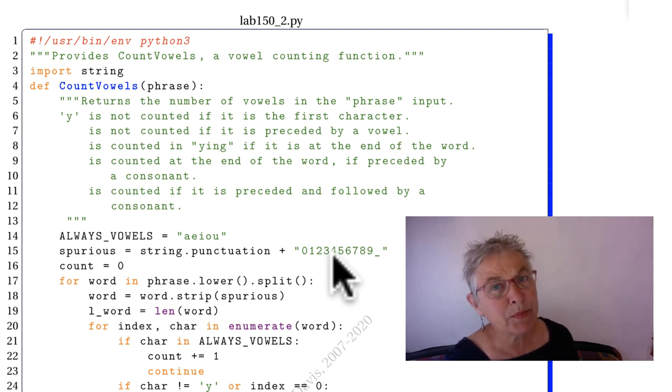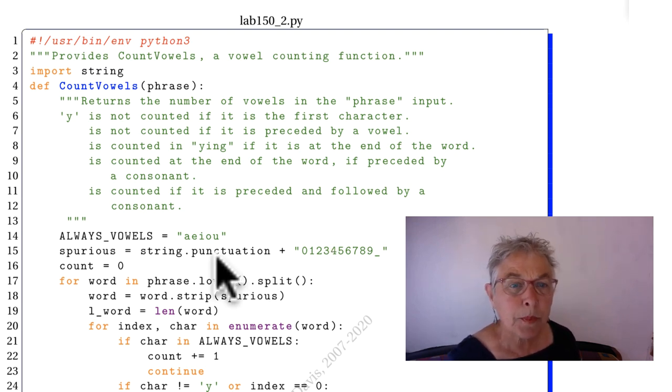So they are spurious if they're on the ends of words. Count is going to keep our vowel count. We are for looping through the lowercase version of our phrase that has been split into the word. So those are the words.